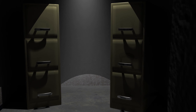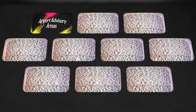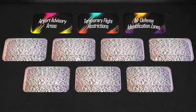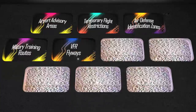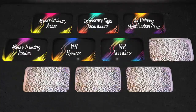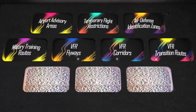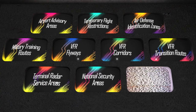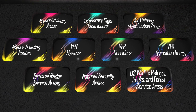This last category of airspace contains various auxiliary types of airspace that are each unique and don't fall into any other classification of airspace. We will be discussing airport advisory areas, temporary flight restrictions, air defense identification zones, military training routes, VFR flyways, VFR corridors, VFR transition routes, terminal radar service areas, national security areas, and finally, U.S. wildlife refuges, parks, and forest service areas.